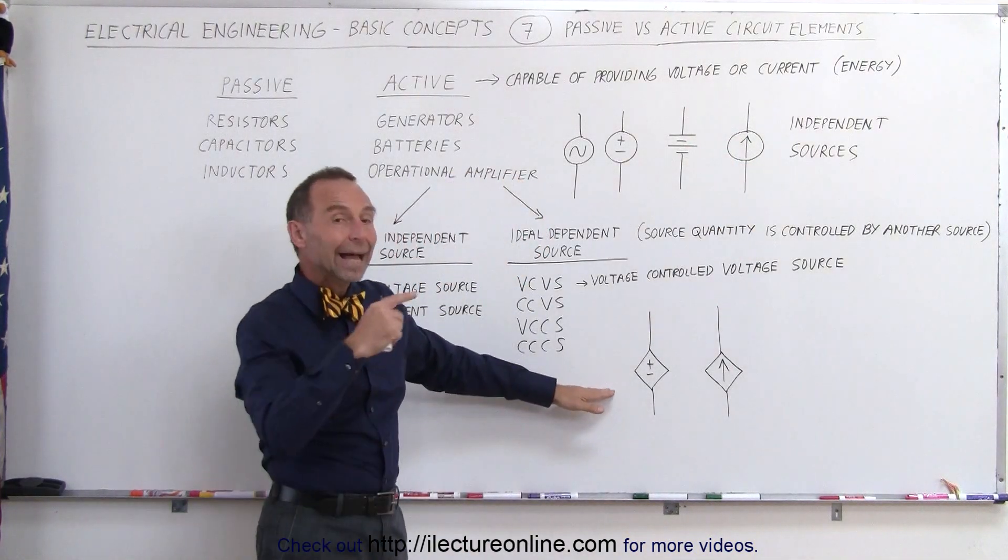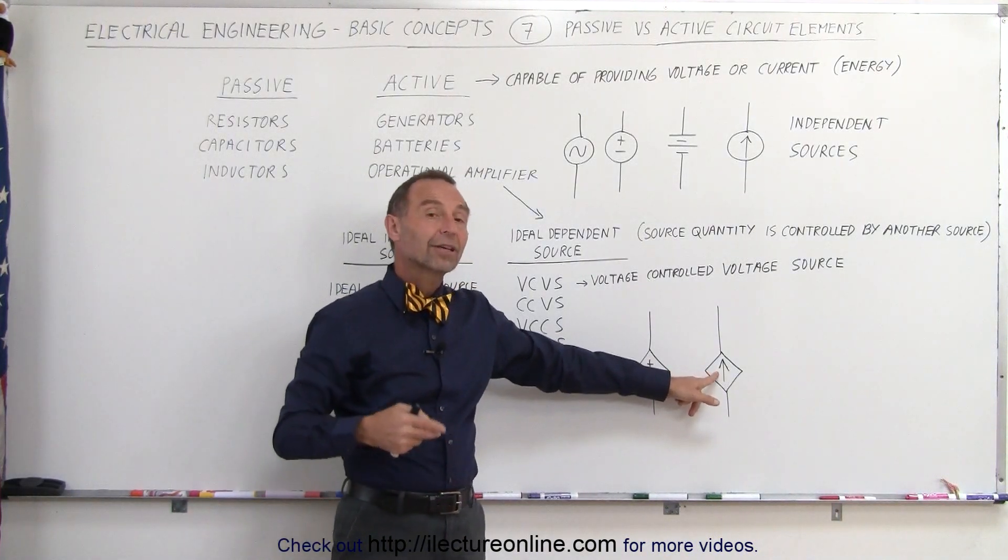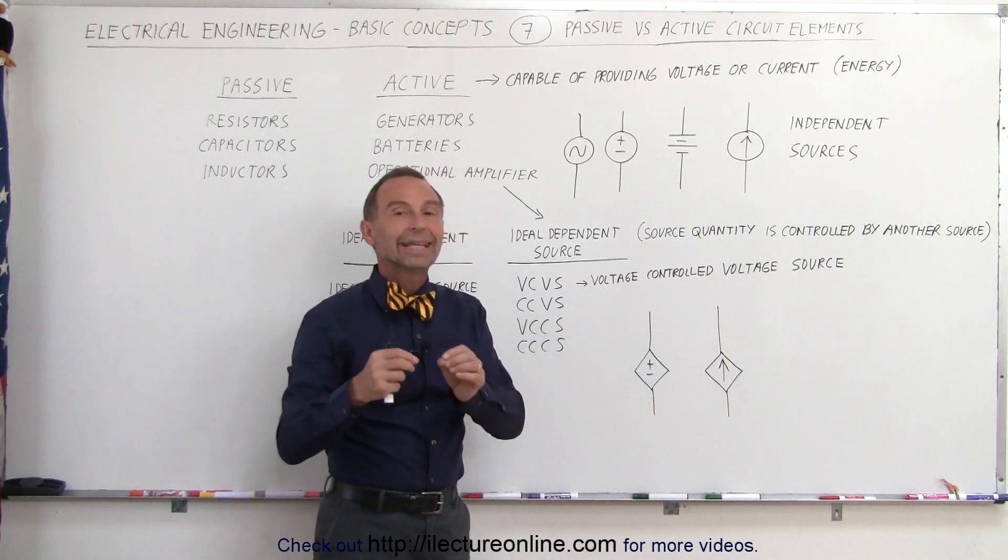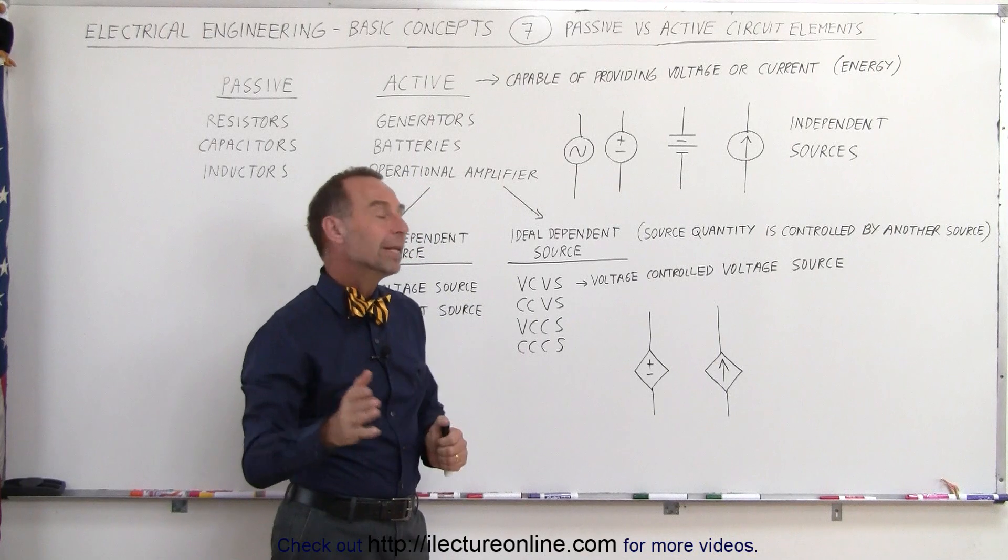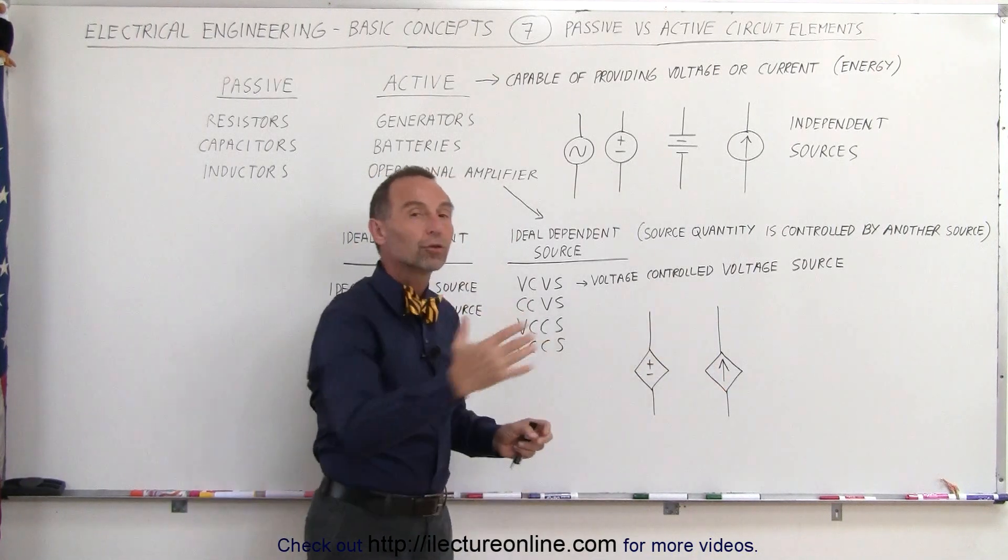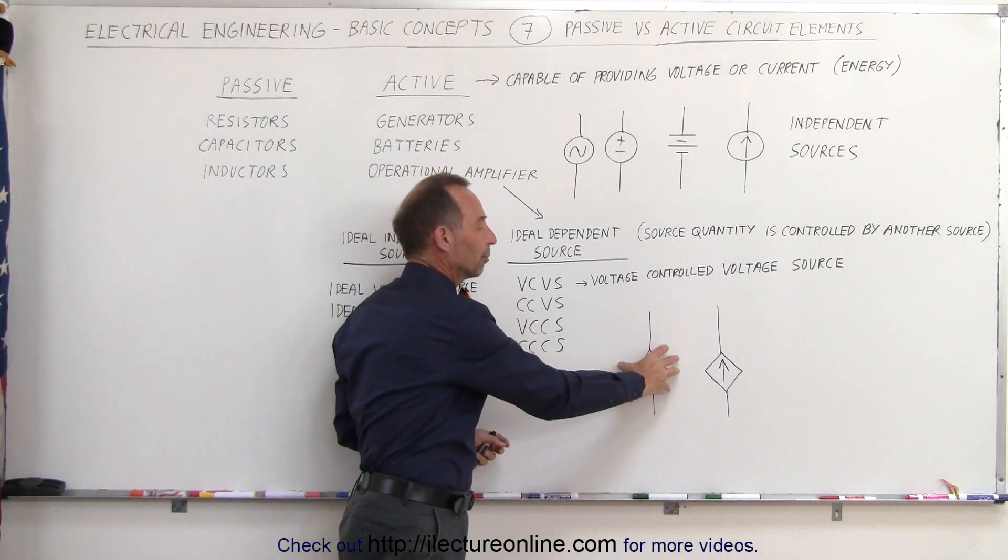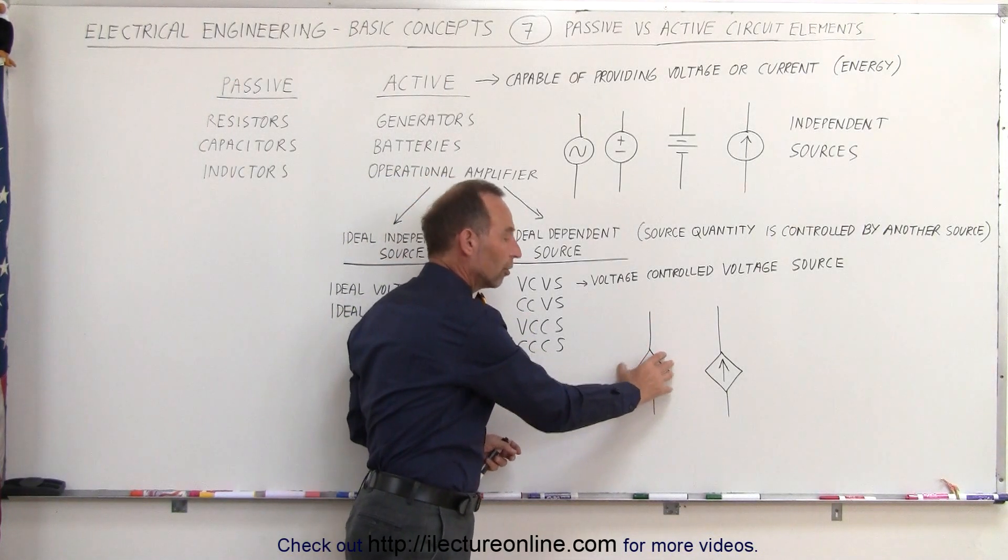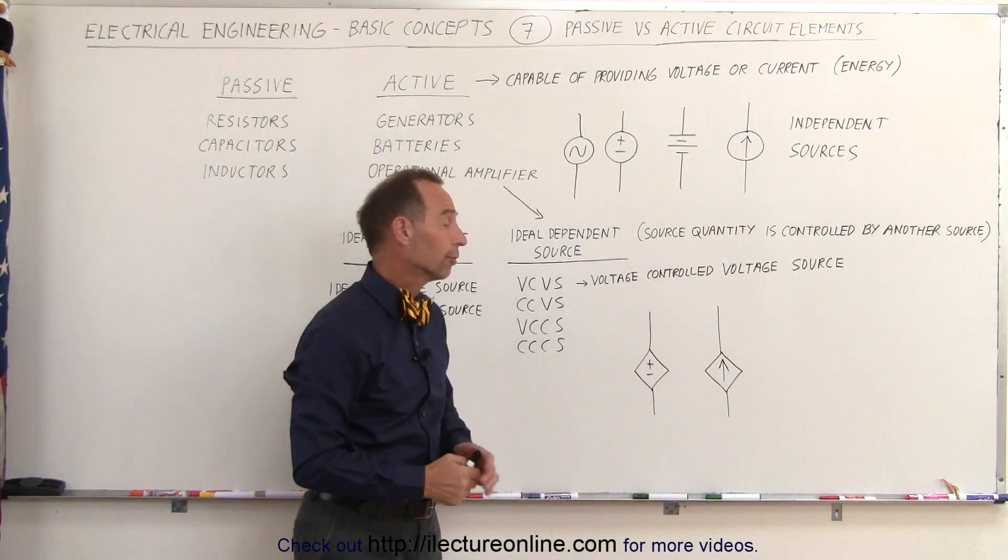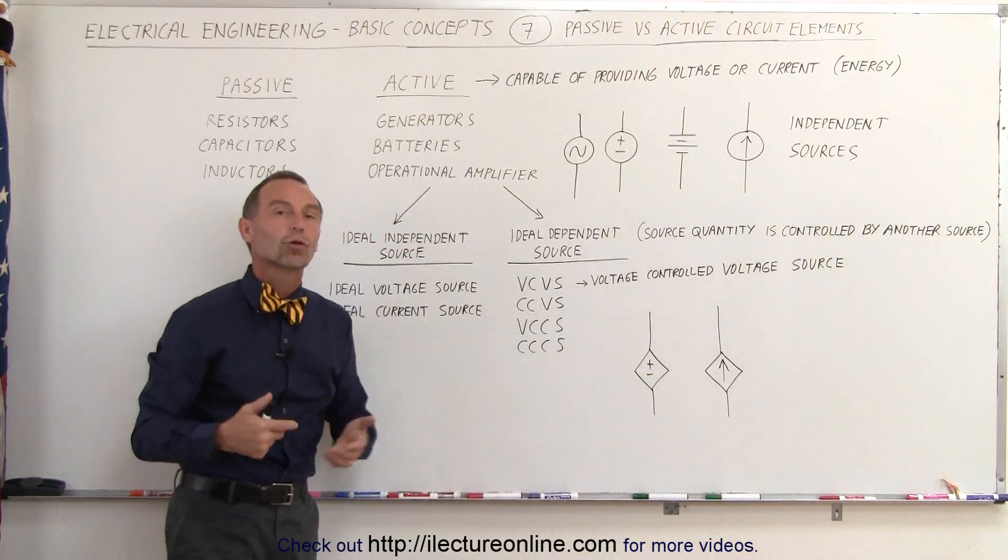If we draw a little diamond around it, this can still be a time varying source or a current source, but if we draw a little diamond around it then it's a dependent source, meaning the voltage supplied or the current supplied depends upon some other source. This is controlled by another source, so therefore this produces a voltage, a time varying voltage or a current, could be a time varying current, due to the presence of another source or due to the control of another source.